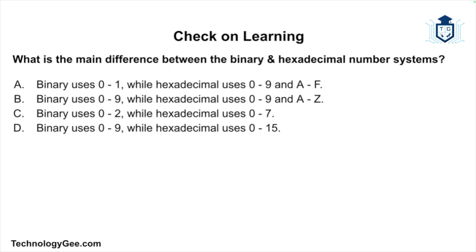The first question is: What is the main difference between the binary and hexadecimal numbering systems? Is it A, binary uses 0 through 1 while hexadecimal uses 0 through 9 and letters A through Z? Is it B, binary uses 0 through 1 while hexadecimal uses 0 through 9 and letters A through F? Is it C, binary uses 0 through 2 while hexadecimal uses 0 through 7? Or is it D, binary uses 0 through 9 while hexadecimal uses 0 through 15?